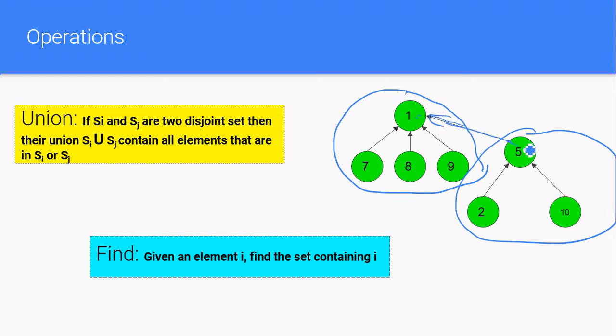So here we set the parent of node 5 as node 1. So this is the union operation. And the find operation is quite simple.